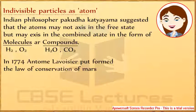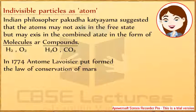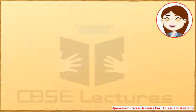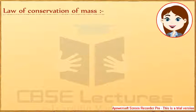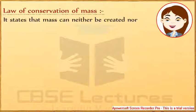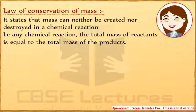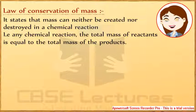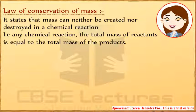In 1774, Antoine Lavoisier put forward the Law of Conservation of Mass. It states that mass can neither be created nor be destroyed in a chemical reaction. That is, in a chemical reaction,